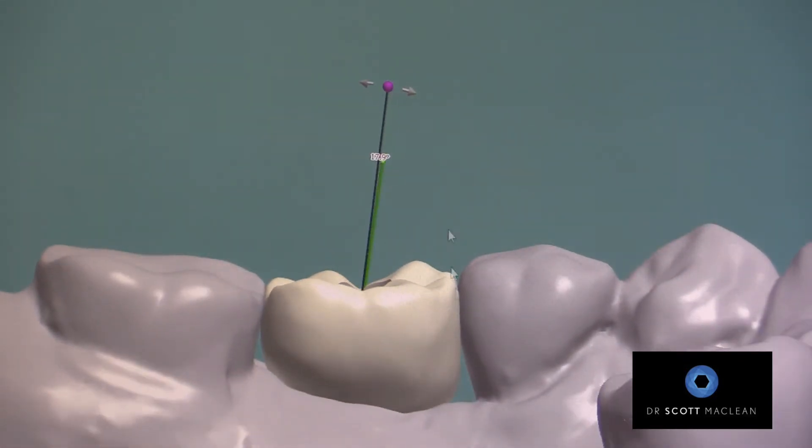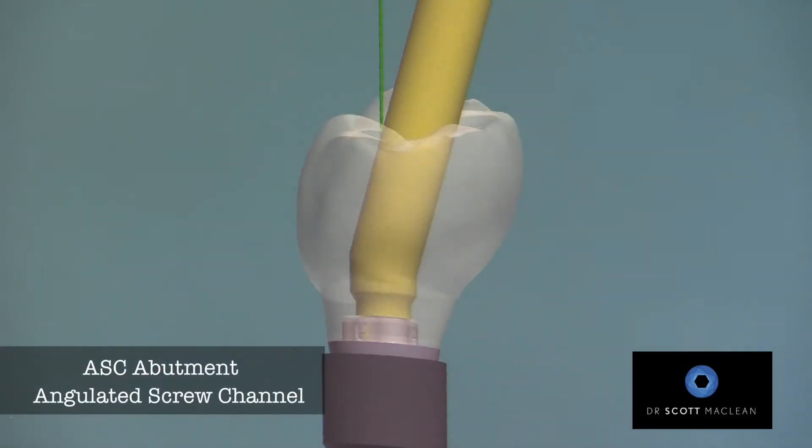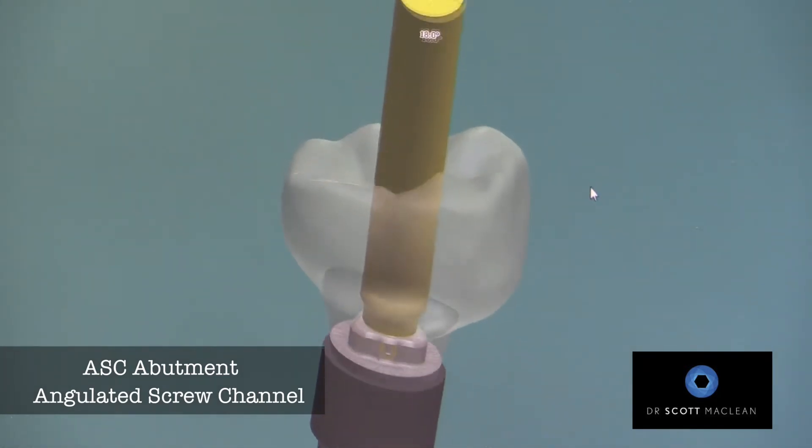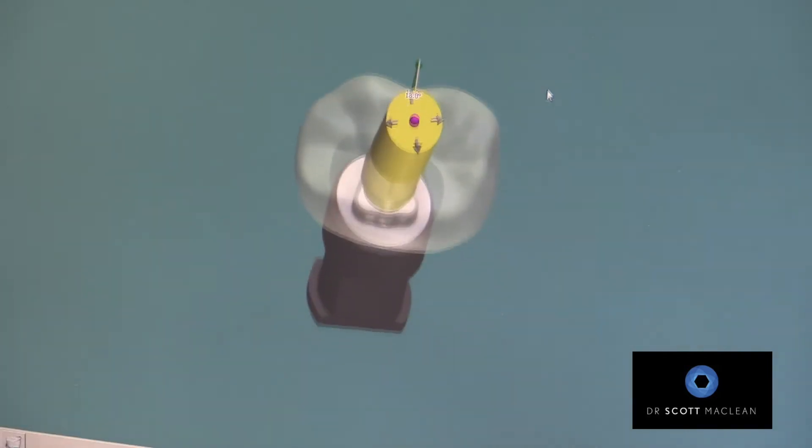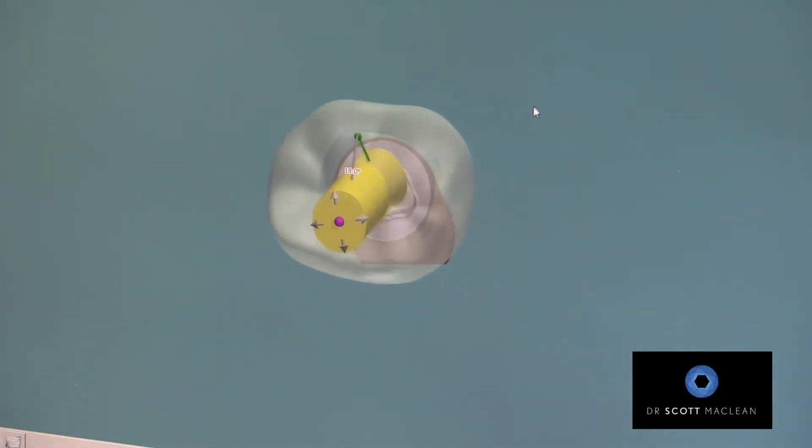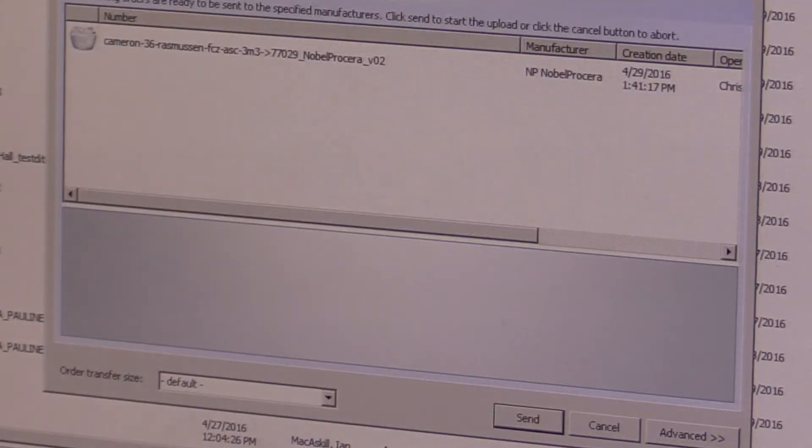And then we can use the OmniGrip screw, so you'll notice that the screw is going to be going down through this channel. And we can get to the screw with this special screwdriver called the OmniGrip screwdriver. So we're able to make everything better by tipping the channel.